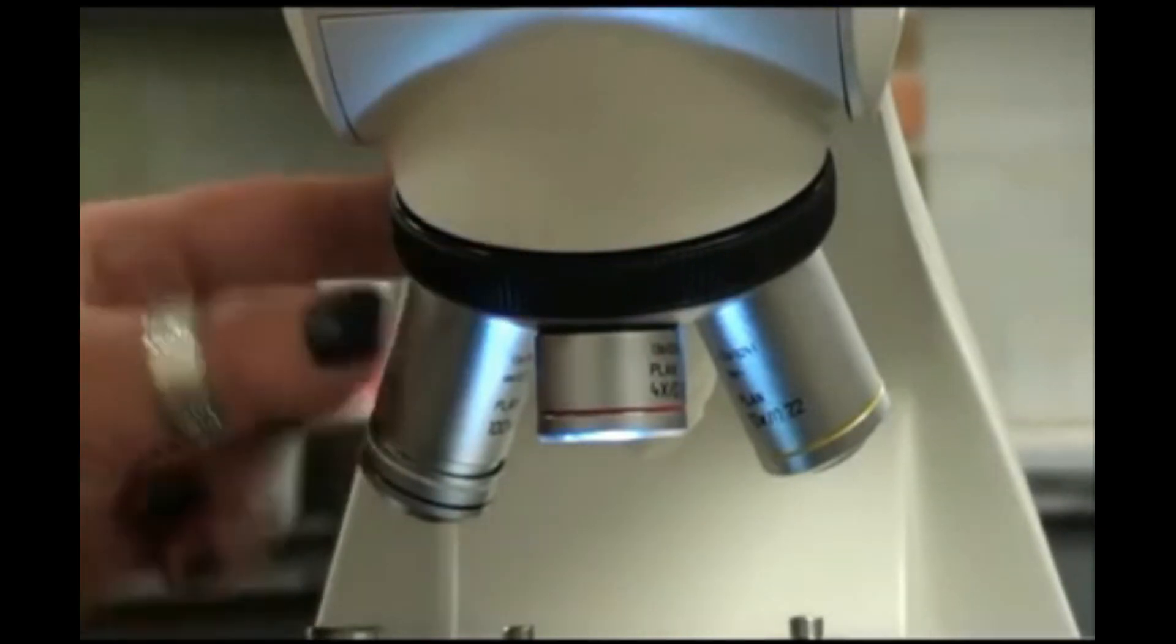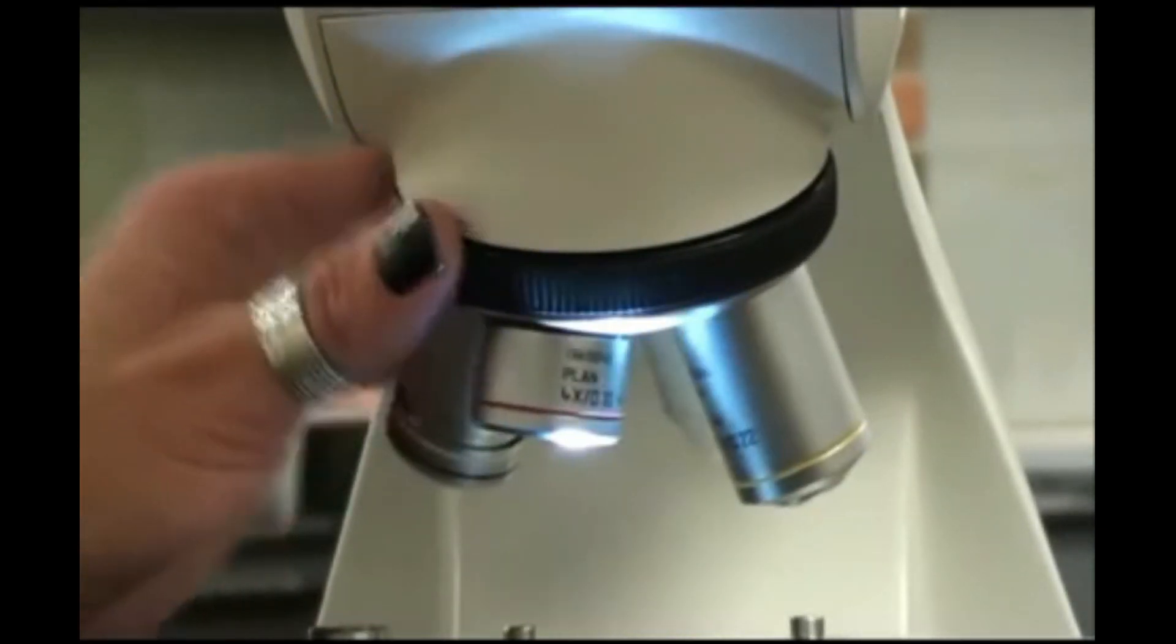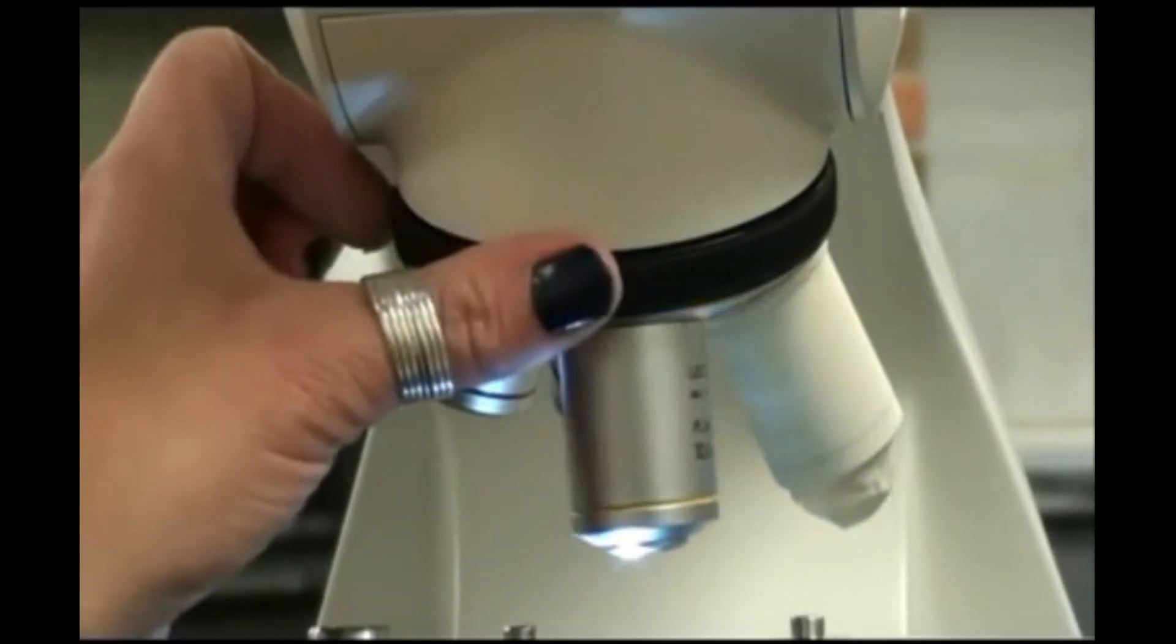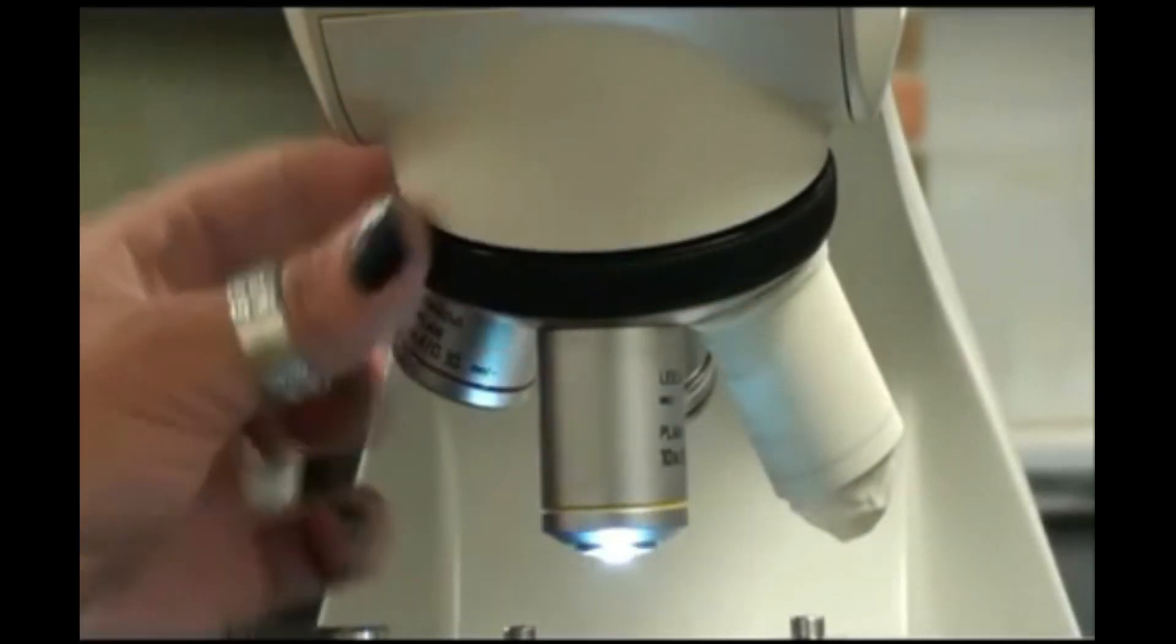The objective lenses are located on a rotating nose piece. Each lens hangs down from this nose piece and can be turned and clicked into position.